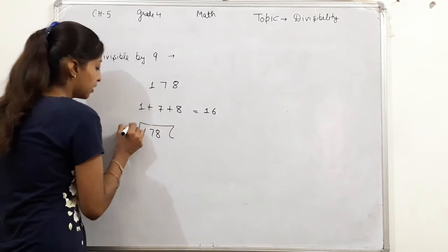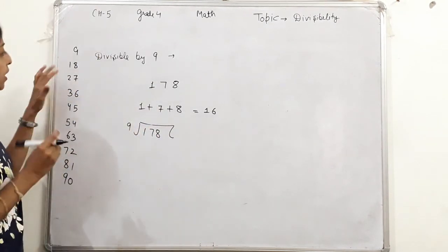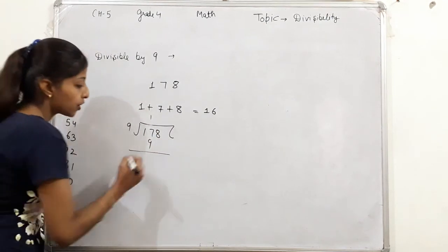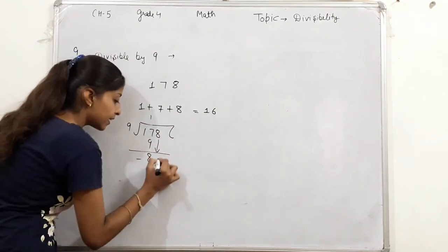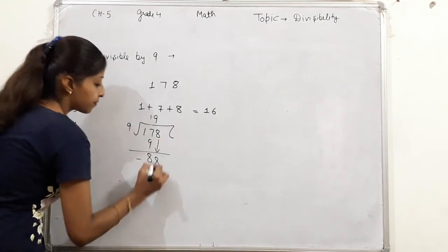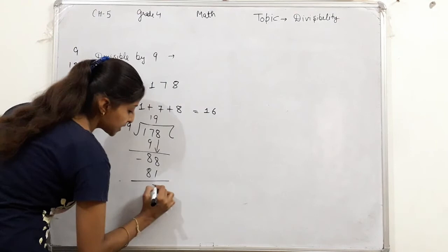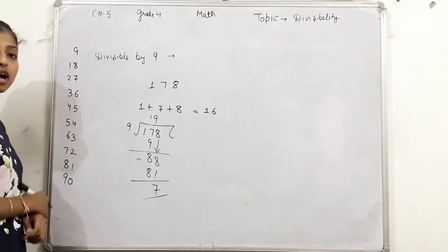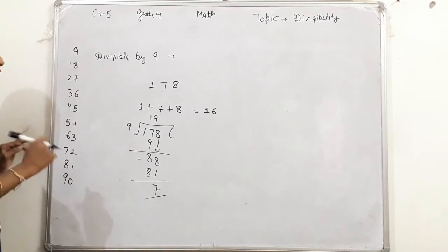178 divided by 9: 9 ones are 9, minus, 8 remains. Bring down 8. 9 nines are 81 smallest, minus, 7 remains below. So this is not divisible.